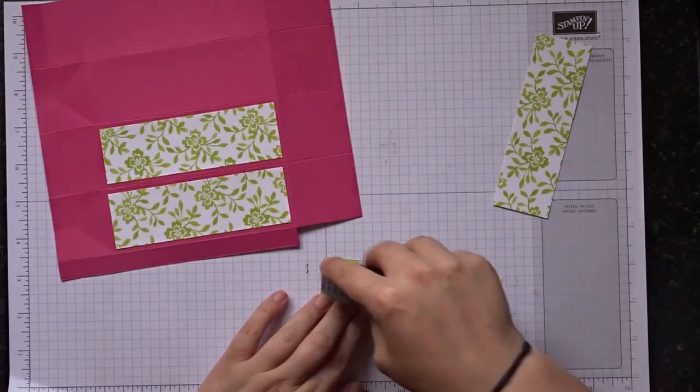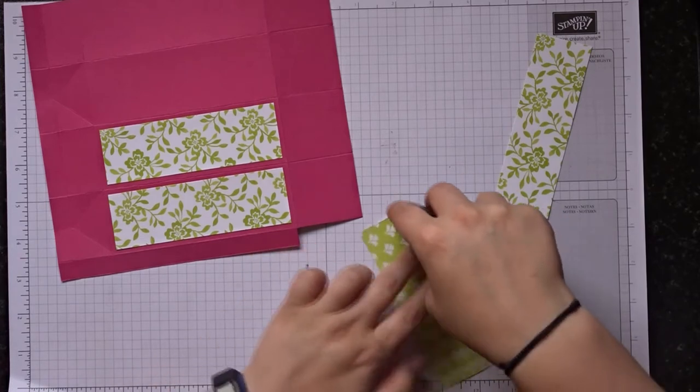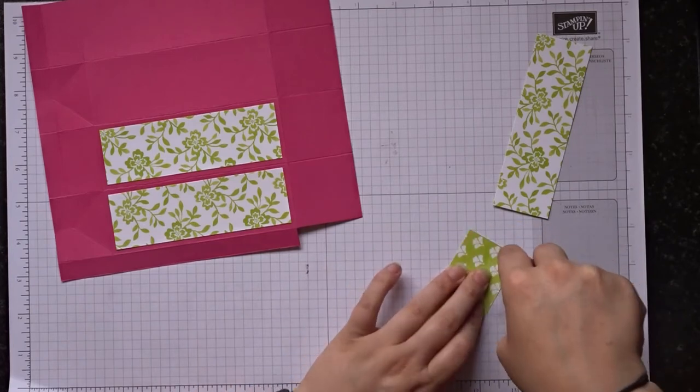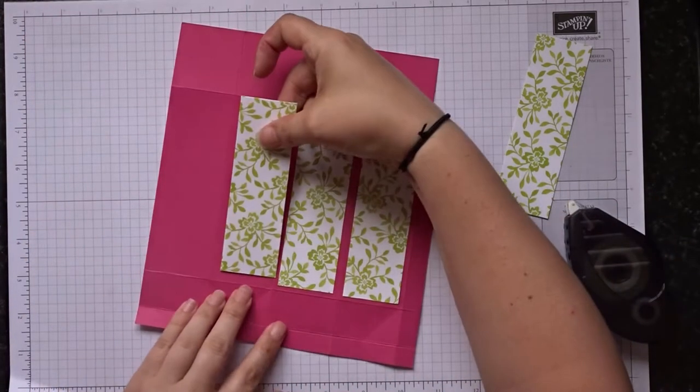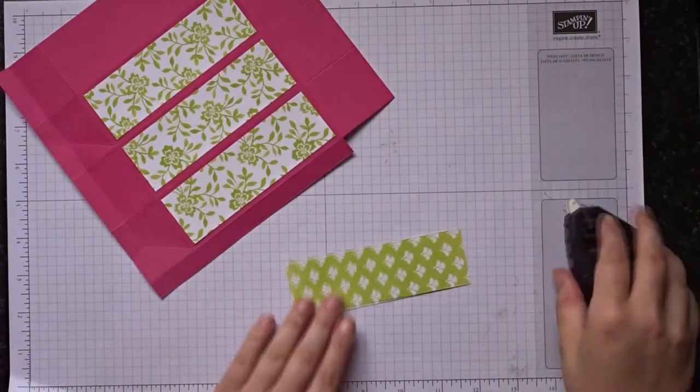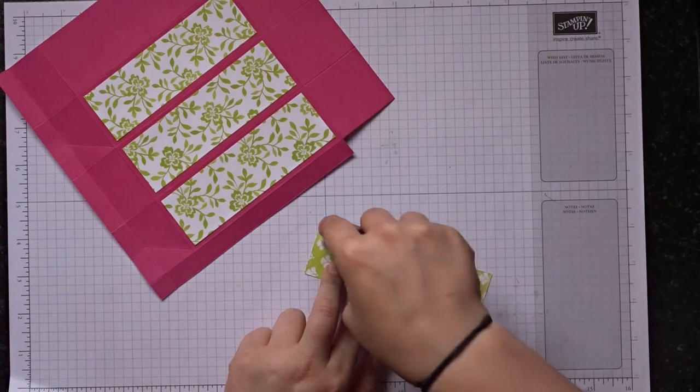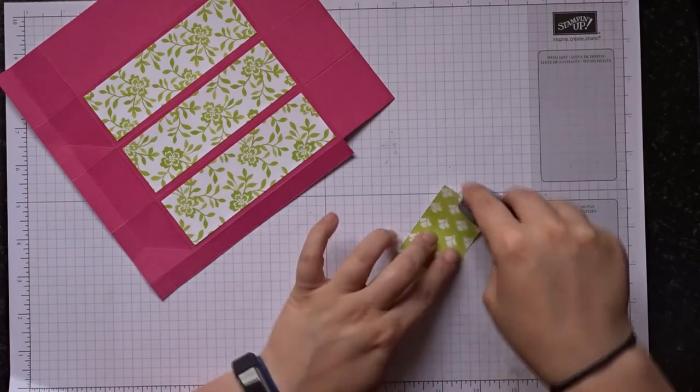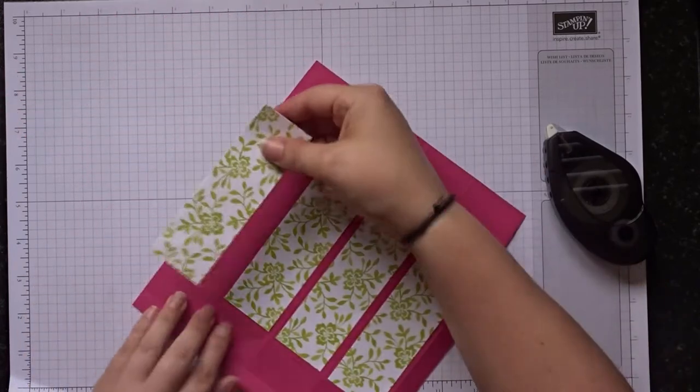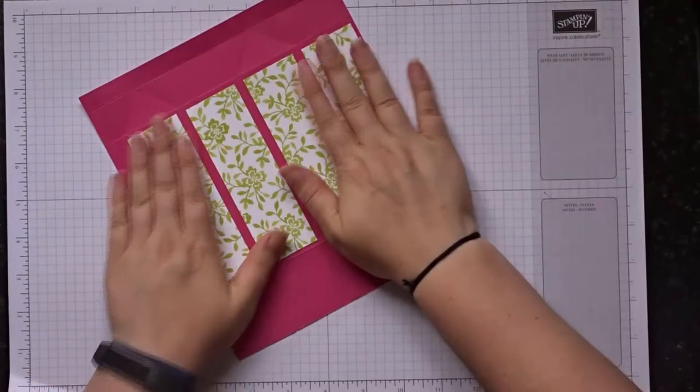So by now the new catalogue will be out, came out on the 1st of June. I'm guessing you're very excited. I know I am. I've already placed some orders and obviously as a demonstrator you can do some pre-orders. But again, as I've said in many videos, I do love these new in colors. This Lemon Lime Twist is amazing, not a color I would normally choose but definitely I've used it in a lot of my projects recently.